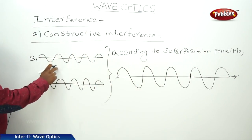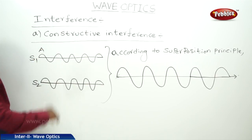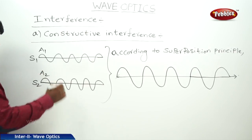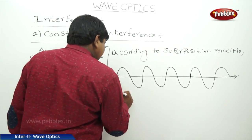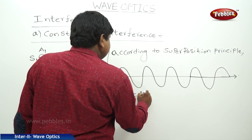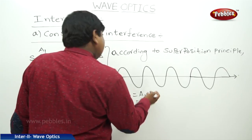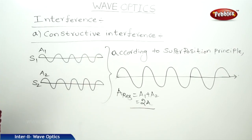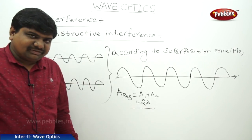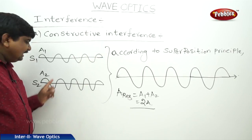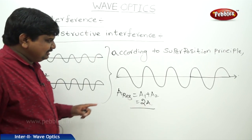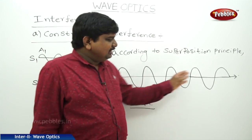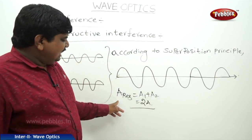Source one is releasing a wave with amplitude A1, and source two releases a wave with amplitude A2. The resultant amplitude in case of constructive interference is A1 plus A2. If A1 is equal to A2, therefore the resultant is 2A. So in constructive interference, the intensities will be added, amplitudes will be added, giving a resultant wave moving in the same direction, with A resultant equal to 2A.